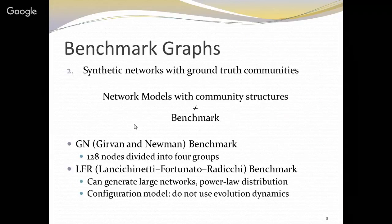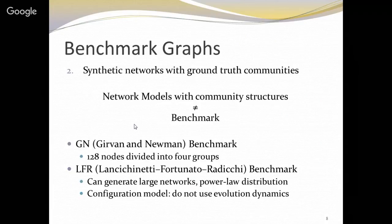Another approach is to generate synthetic networks with ground truth communities. We can use network models for this. However, many models available in the literature generate networks with community structure but do not discuss how to obtain information about which node belongs to which community, and do not discuss how to generate different kinds of communities. So networks with community structure are not equivalent to benchmarks. The two most commonly used benchmark graph generators are the GN — Girvan-Newman — benchmark graph, and the LFR — Lancichinetti-Fortunato-Radicchi — benchmark graph.